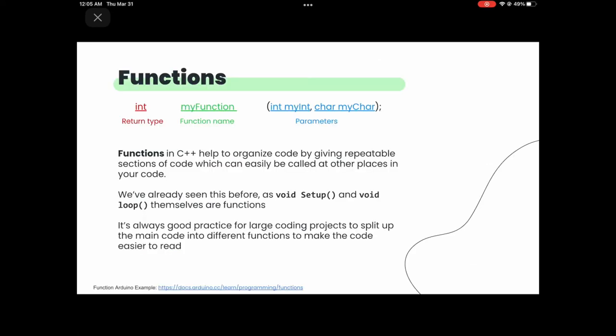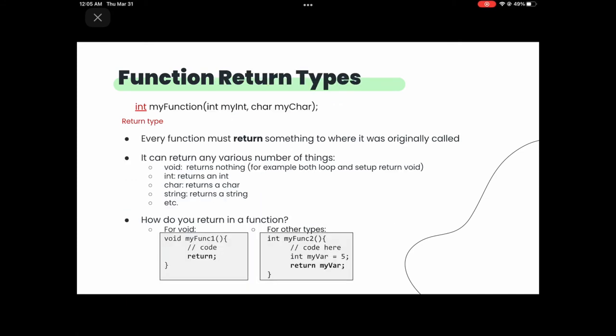Now let's move on to functions. Functions in C++ help us organize our code by separating it into named portions. We've already seen some functions — void setup and loop are functions themselves. A function has a return type, a name, and optional parameters. Every function must return something — if you don't want to return anything, use void. Otherwise you can return int, char, string, whatever you want. Inside a void function, just write return. Inside a typed function, return an actual value.